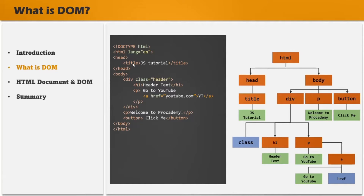In the head, we have this title tag. So a title object will be created in the DOM, and this title has some text content, so for that also an object will be created. Then, we have this body and in the body, we have a div element, a paragraph element and a button element. So in the body, an object for div, paragraph and button will be created. For this paragraph element, we have some text content, so that text content will be created on that paragraph. And for this button also, we have some text content, so that text content will be created on that button object.